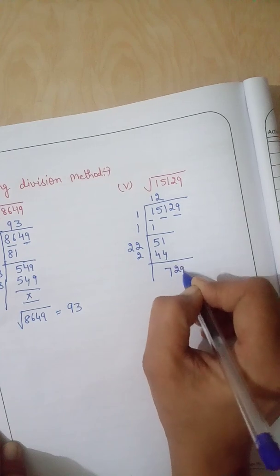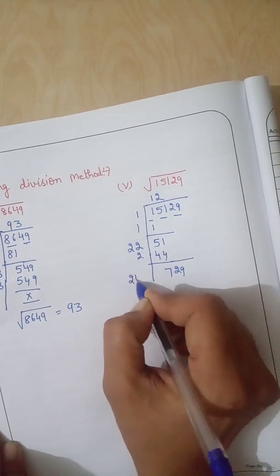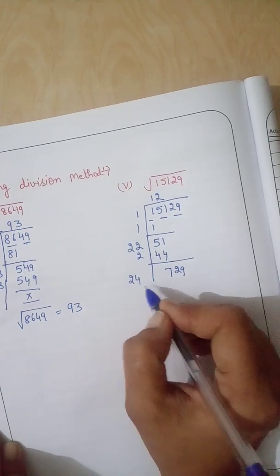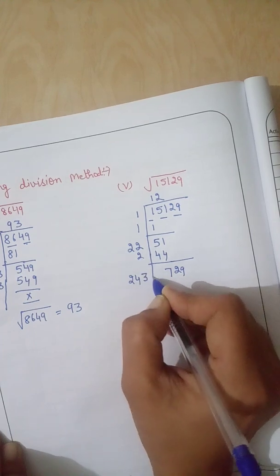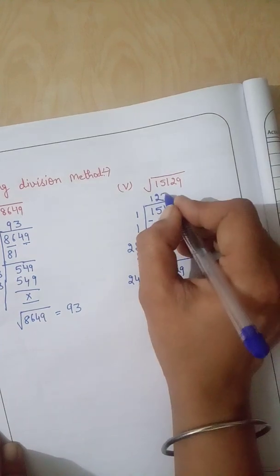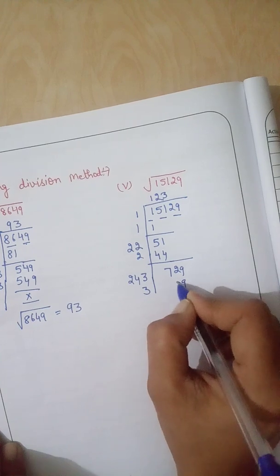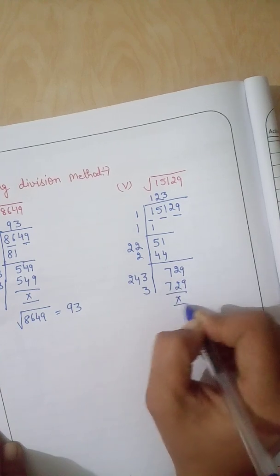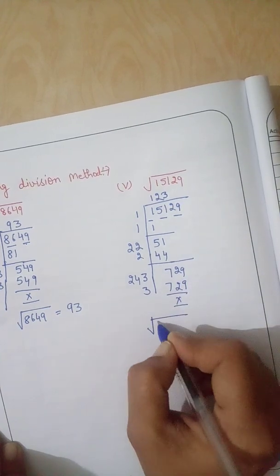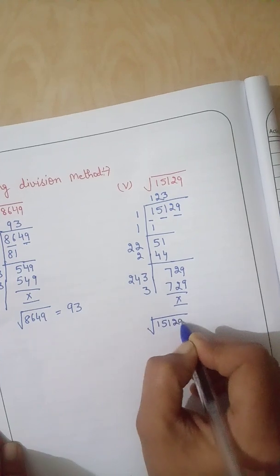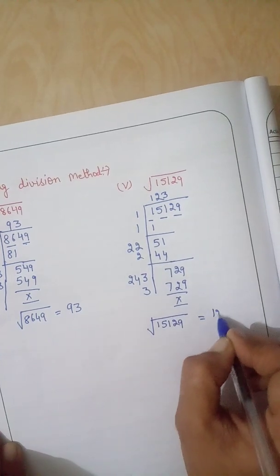Now 29. 22 plus 2 is 24. 2 times 3 is 6, 2 times 4 is 8. It is divisible by 3. 3 times 3 is 9, 3 times 4 is 12. 2 times 6 plus 1 is 7. Square root of 15,129 is 123.